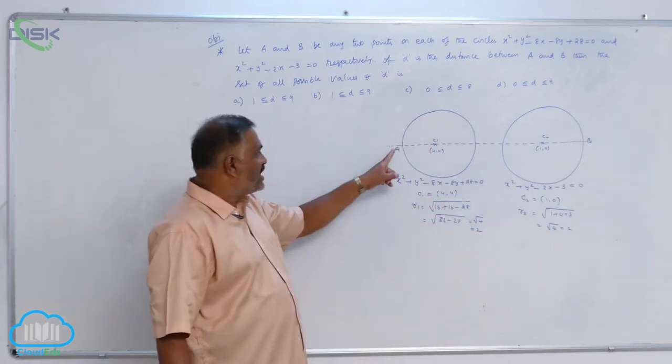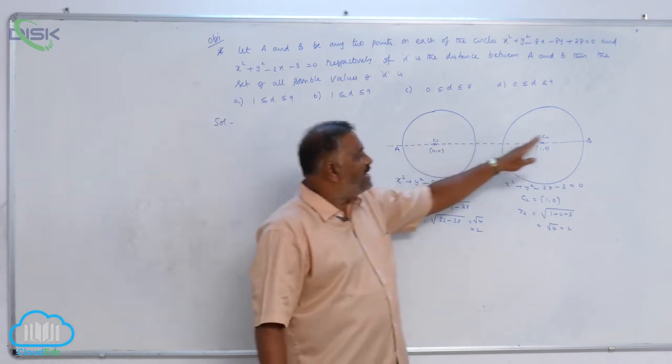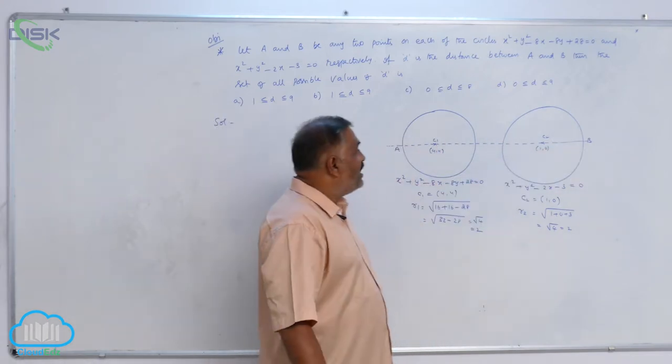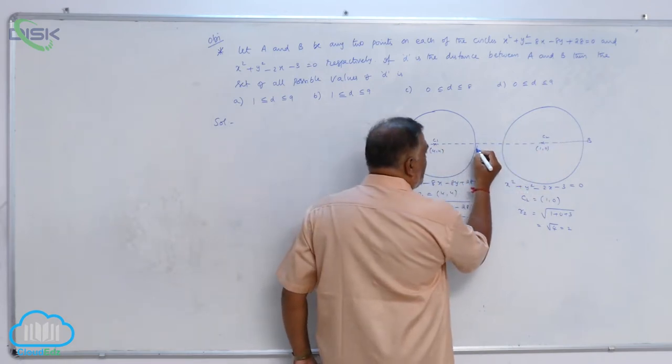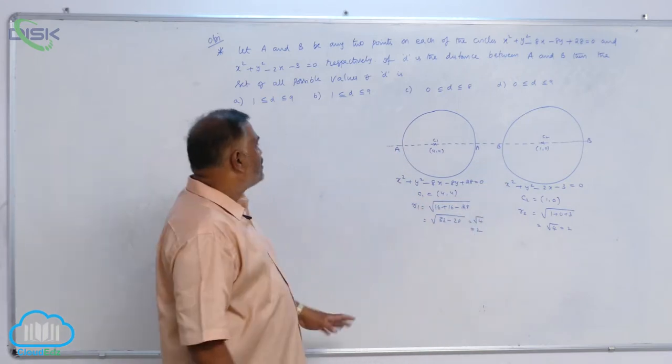If A is one point on one circle and B is a point on another circle, this is the maximum distance. And when these two are placed here, this is called the minimum distance.